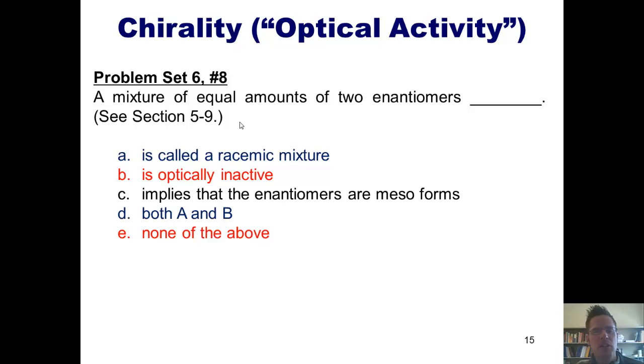Here's another one. A mixture of equal amounts of two enantiomers is what? A, it says, is called a racemic mixture. Is that true? Well, as we discussed earlier, the answer is yes.